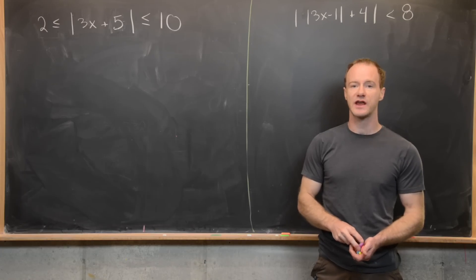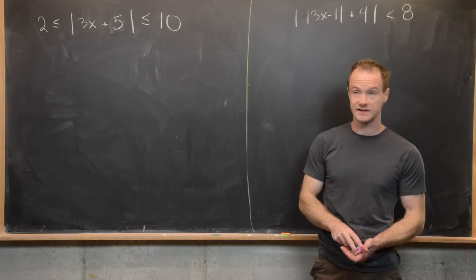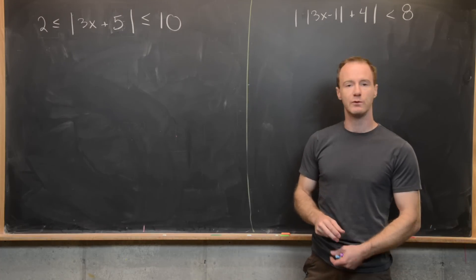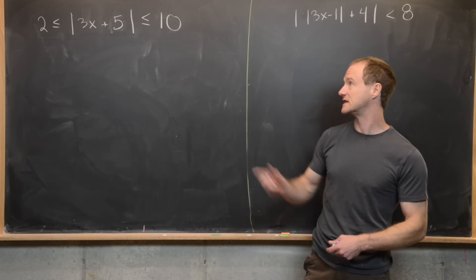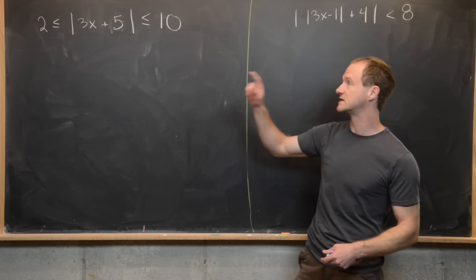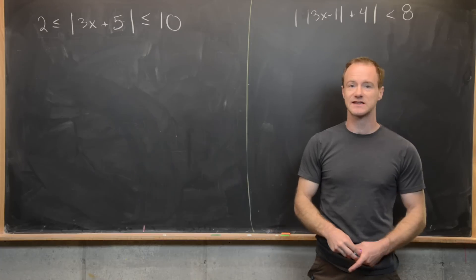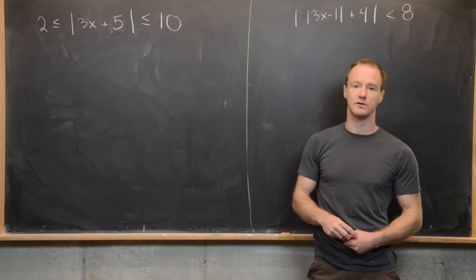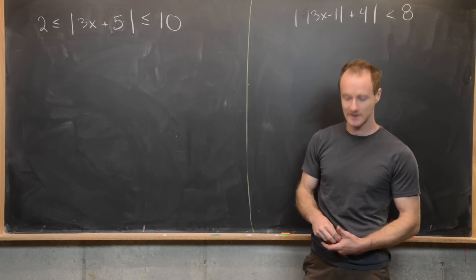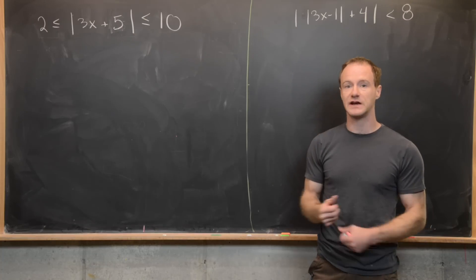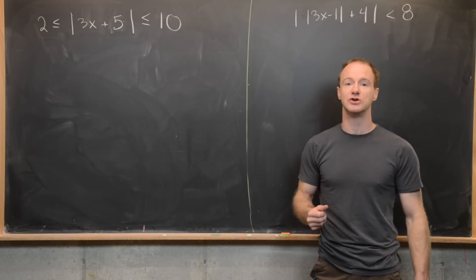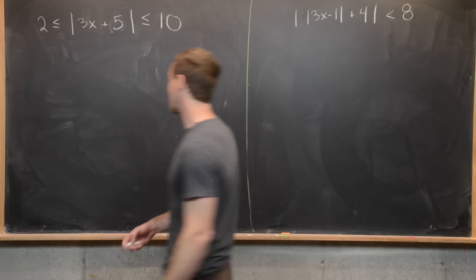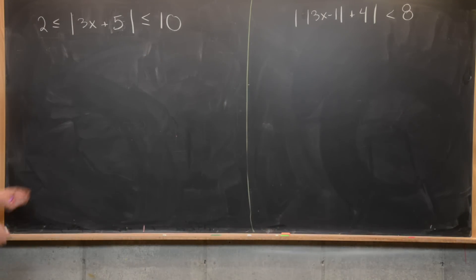Here we're going to look at two trickier inequalities involving absolute values. Let's jump into the first example. We want to find all values of x that satisfy 2 is less than or equal to the absolute value of 3x plus 5, which is less than or equal to 10. This compound inequality can be broken up into two inequalities joined by an AND.